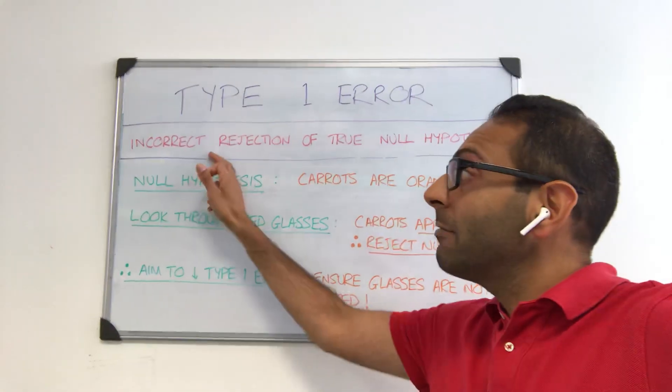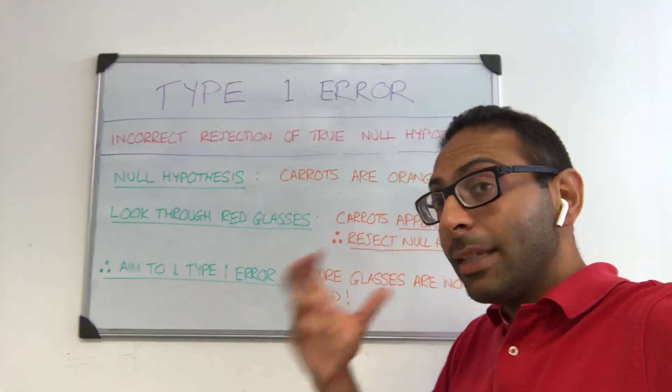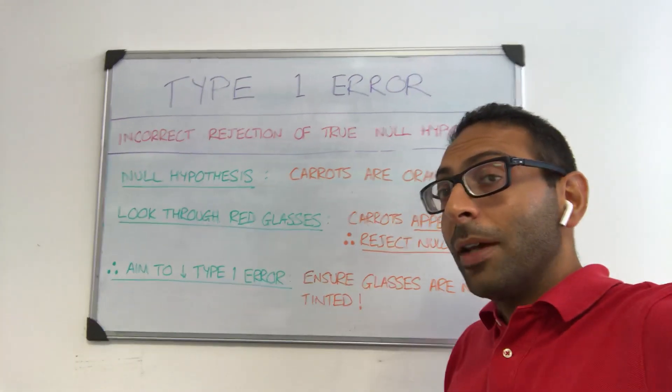So a type 1 error is when you incorrectly reject a true null hypothesis. This is really simple, but hopefully when you get the basics, you can put it into context in terms of medical research.